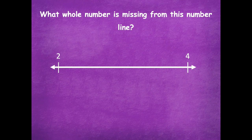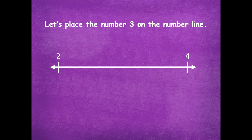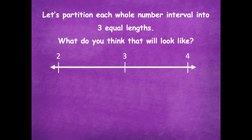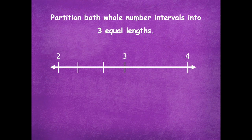So let's place three on the number line. Pause the video, go ahead and add that in, and then click play when you're ready for the next step. Now let's partition each whole number interval into three equal lengths. Between two and three — if I partition that into three equal lengths, what am I really splitting that into? Thirds. So in between this space right here I would have thirds — those are my three equal parts.